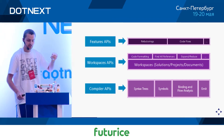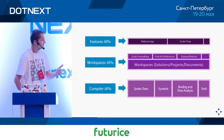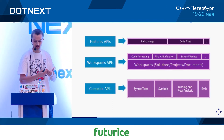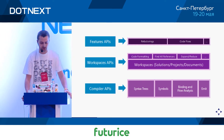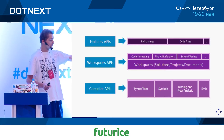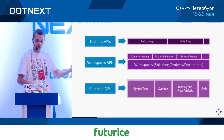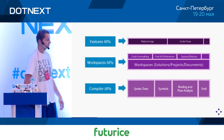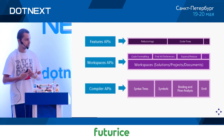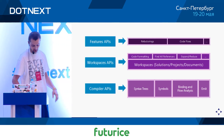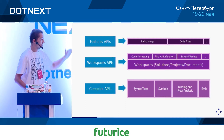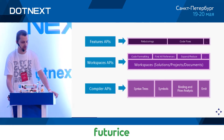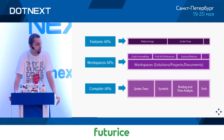Then we have the workspace APIs, which deal in general with the .NET project system. If you want to analyze something in the context of a solution or project, you'll use workspace APIs. For example, you can use the compiler API to pick up a symbol, then use workspace APIs to find all references to that symbol throughout the whole solution. If you want to apply formatting uniformly throughout the whole project, you'd also use workspace APIs. From the OmniSharp perspective, workspace APIs are absolutely critical to building any kind of C# tooling for editors like Visual Studio Code, Vim, or Emacs.